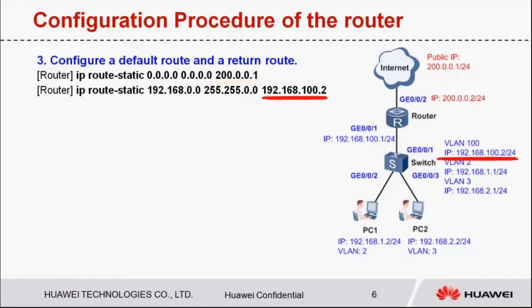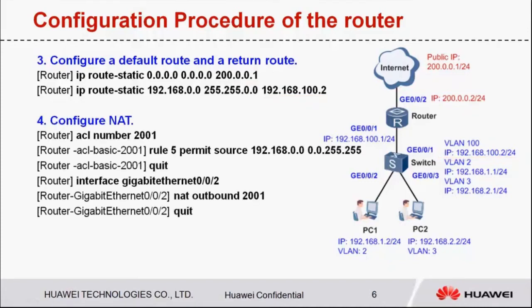The next hop address of the return route is the IP address of the switch's uplink interface. Step 4: Configure NAT so that internet users can access the internet. NAT is only valid for source IP addresses in the network segment 192.168.0.0, and can be used on GE002 in the outbound direction.